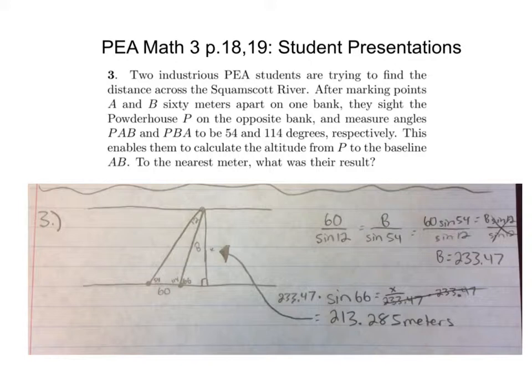You found that side by doing 60 times sine 54 divided by sine 12, and that equals 233.47. Then finding the altitude, you do sine 66 equals X divided by 233.47. You multiply both sides, and this equals 213.285 meters.